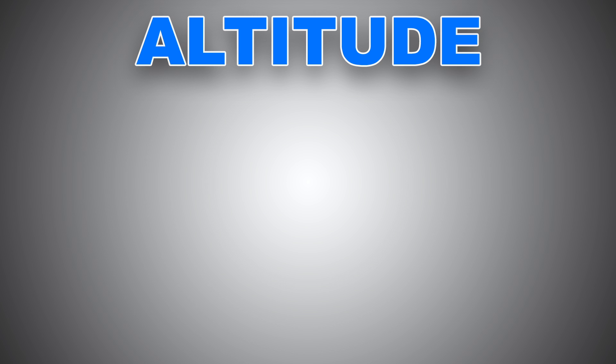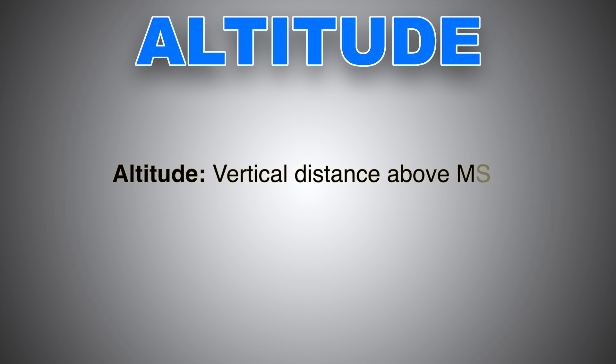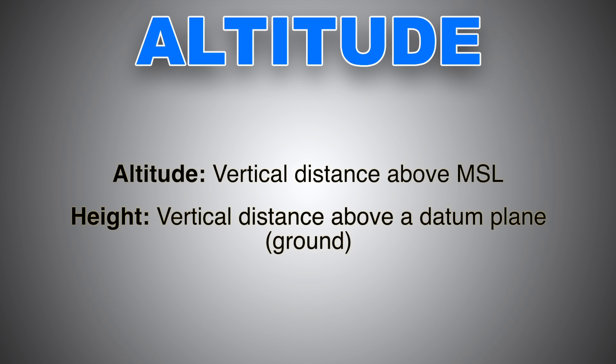The first thing I would like to clear up is the difference between height and altitude. Altitude is the vertical distance above mean sea level. Height is the vertical distance above earth, or terrain, or datum plane.